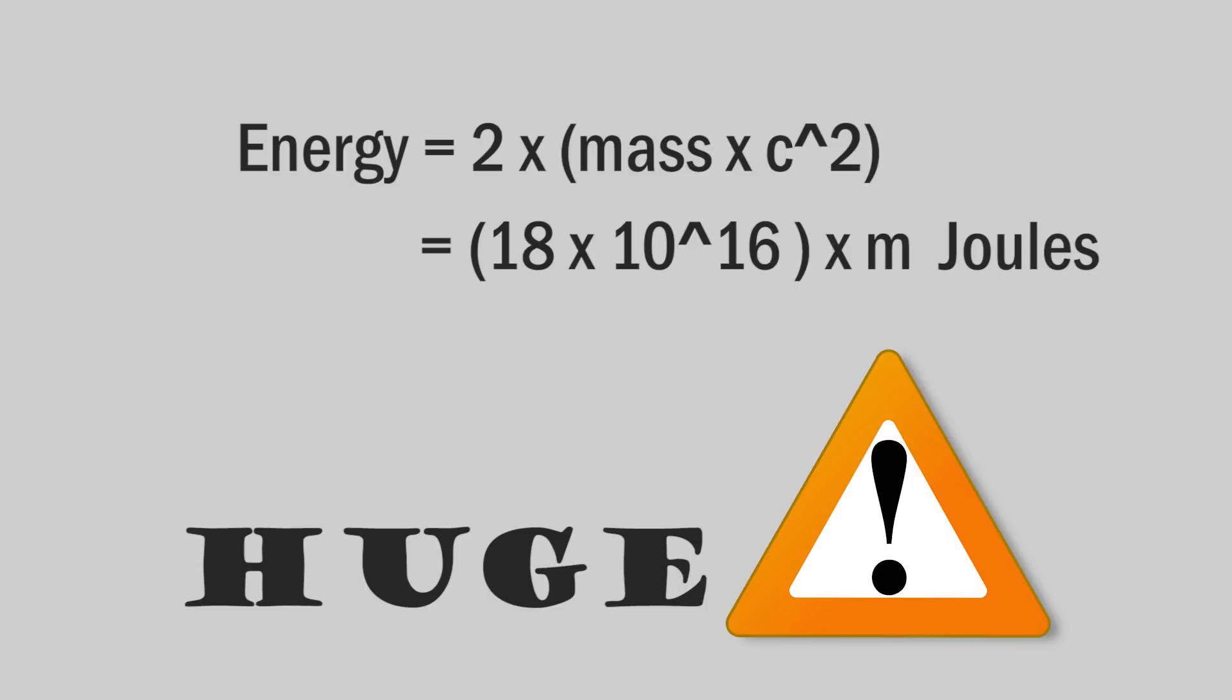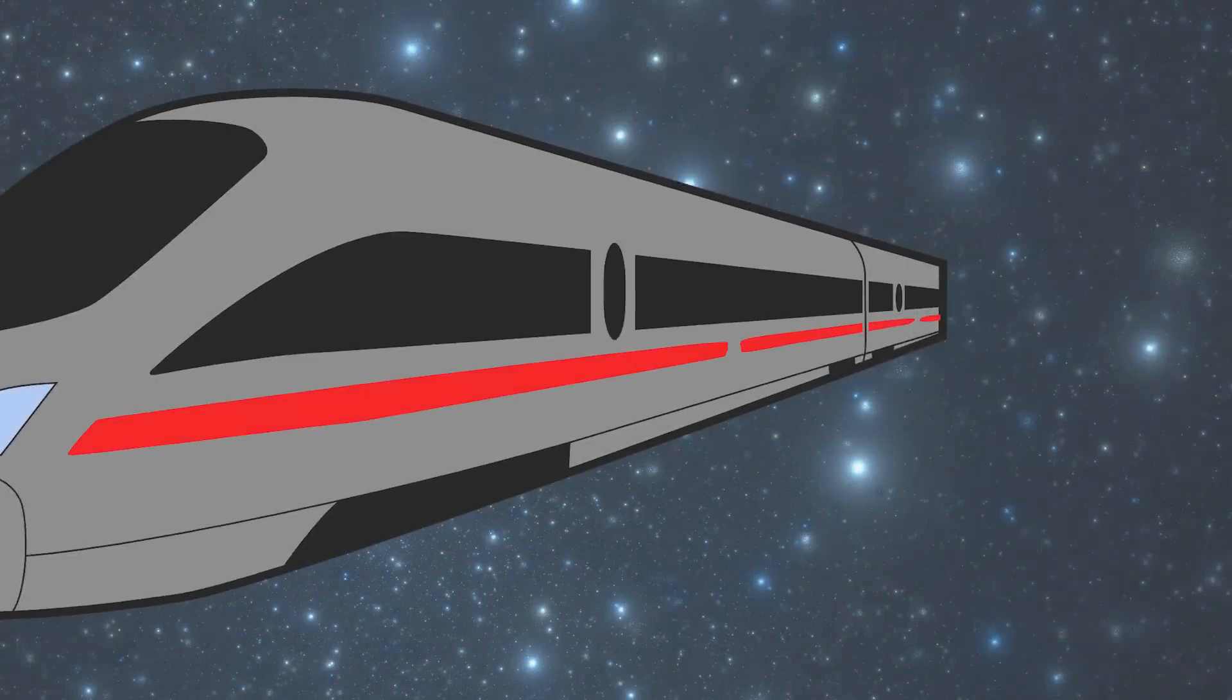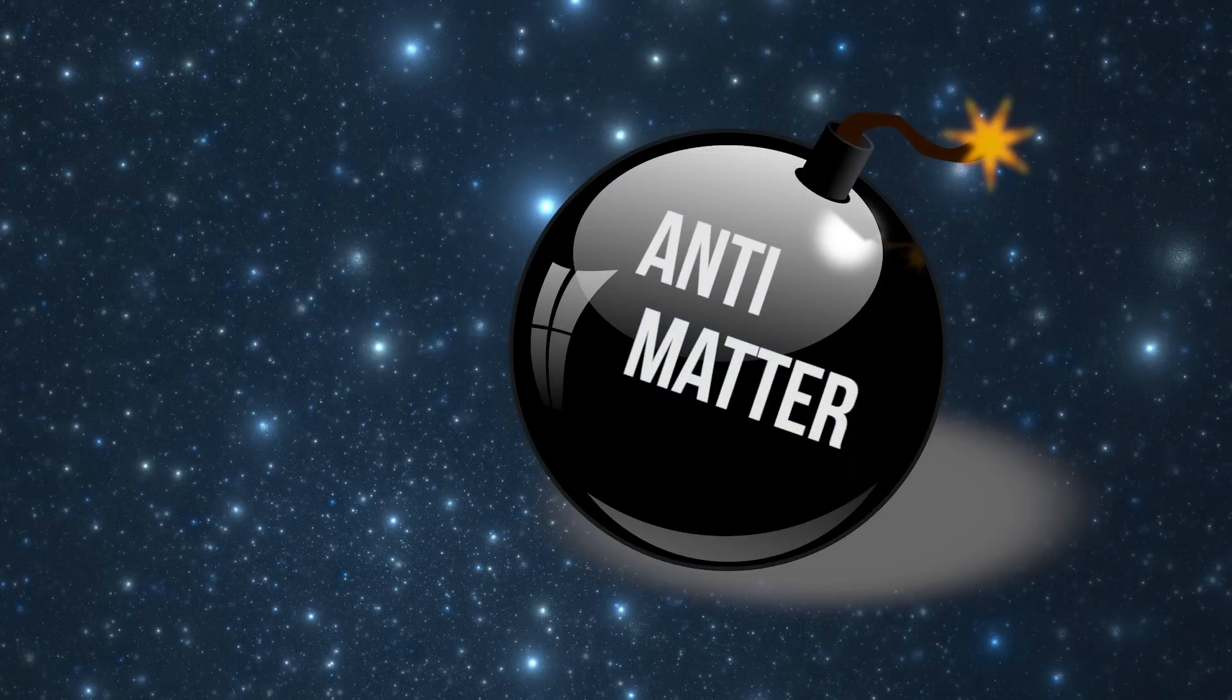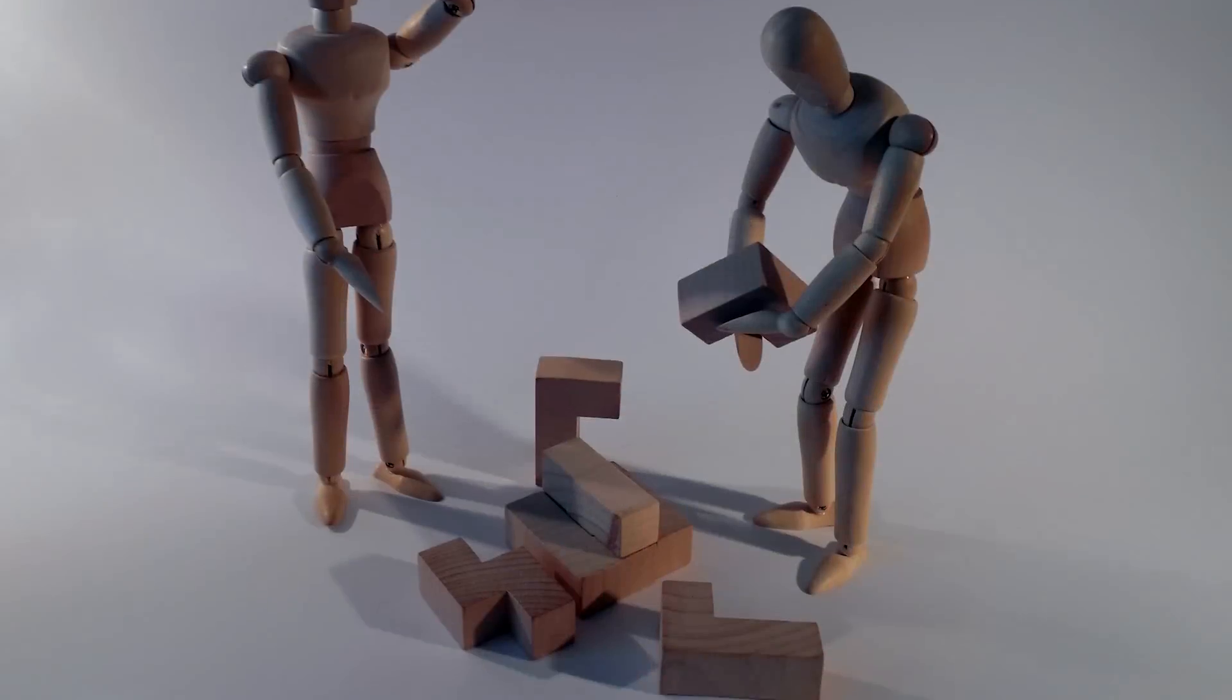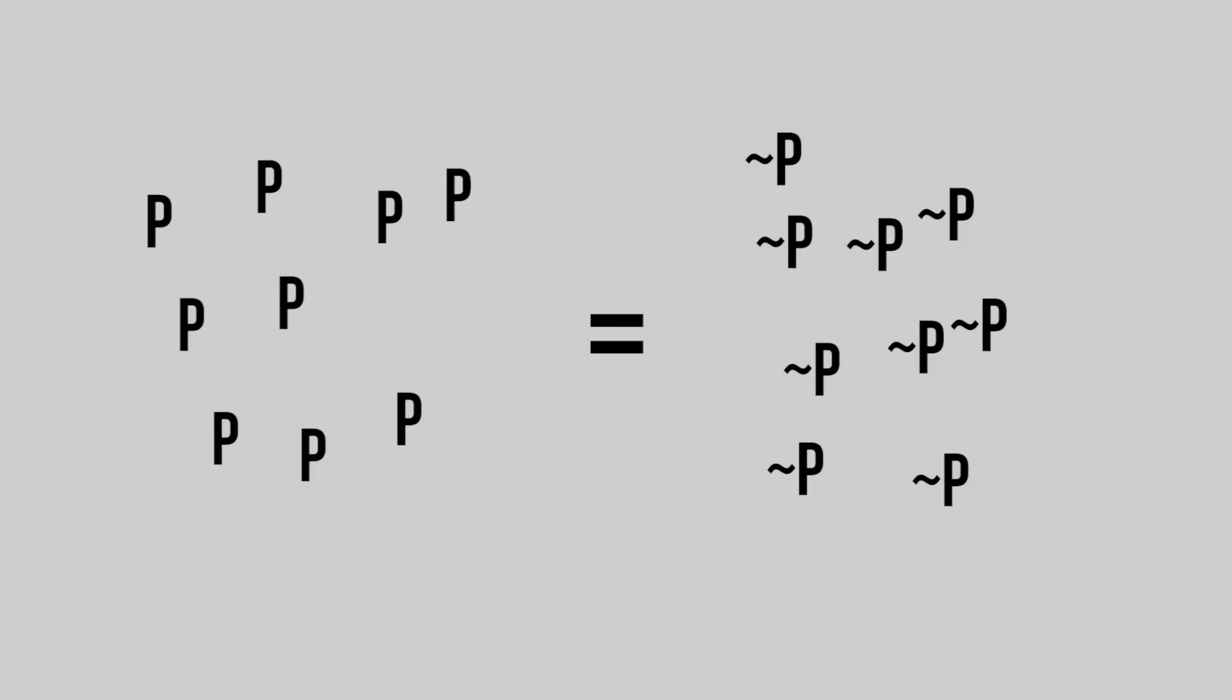Who knows, this ridiculous amount of energy can be used to power space automobiles or make a huge bomb. Only time will tell. But there's a problem: the Big Bang should have created matter and antimatter in equal amounts.